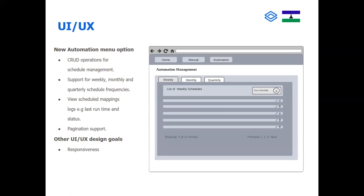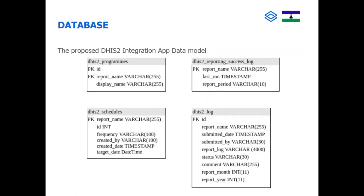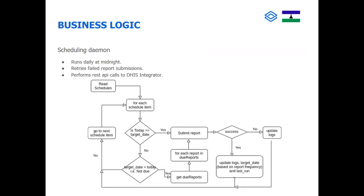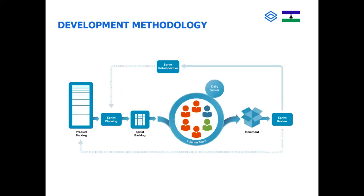The proposed user interface is designed to be user-friendly, with tabs for weekly, monthly, and quarterly periods to support different scheduling needs. The data model tables we proposed support the required functionality. The scheduling daemon checks user-defined schedules — say weekly, monthly, quarterly, or yearly — and if a report is due, it pushes it to the DHIS2 data warehouse instance. For implementation, we used Scrum to remain agile and adaptive throughout the software development lifecycle.